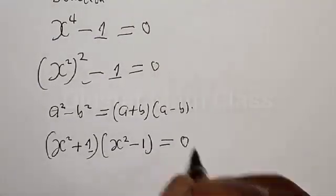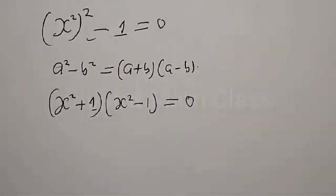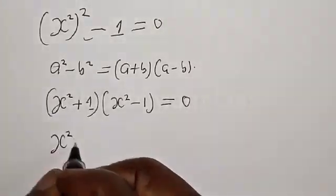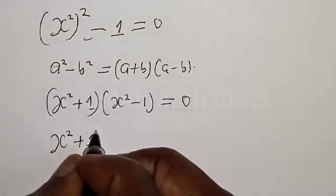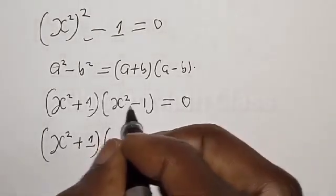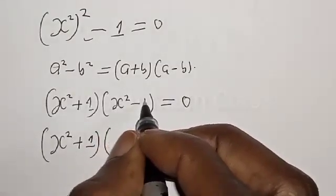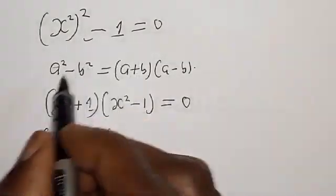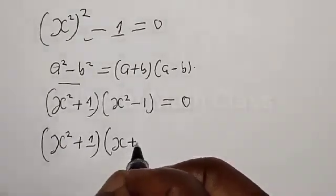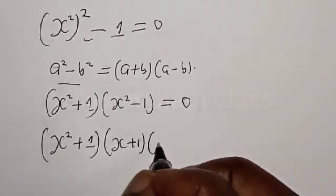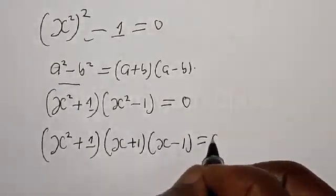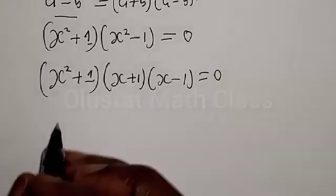Equal to 0. This can also be expressed further: s squared plus 1, then multiplied by — this one is also a difference of two squares because we have s squared minus 1 squared. We apply this formula again: we have s plus 1 multiplied by s minus 1 equal to 0.